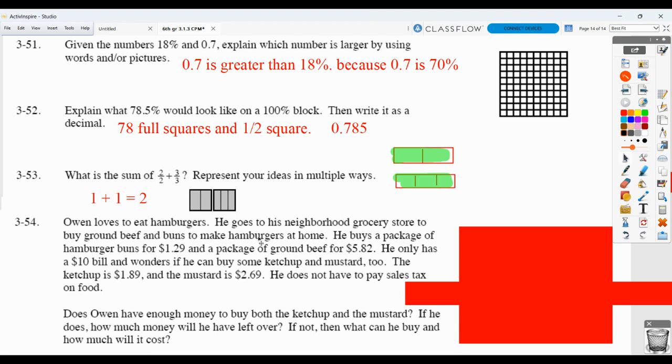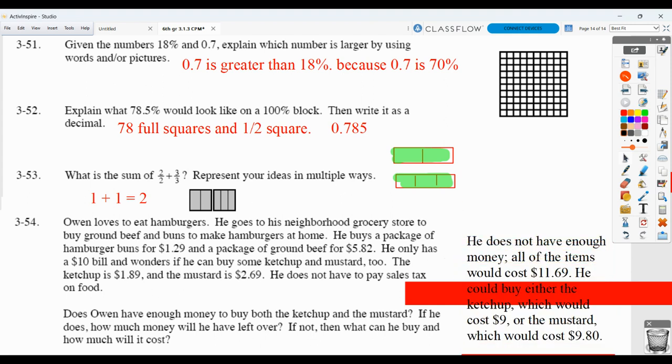So what I'd want to see is that you're adding these two decimal numbers. Remember when you do that, you line up your decimal point. I'd want to see the work for that. And what you find is if he buys all the items, so the $5.82 plus the $1.29 plus the $1.89 plus the $2.69, it's too much. So he can either buy the ketchup, in which case his total is going to be $9, and I want to see how you got that, or he could buy the mustard, in which case his total is going to be $9.80. So again, make sure you have this, but also showing me some of your work of adding the decimals. Good practice on that.